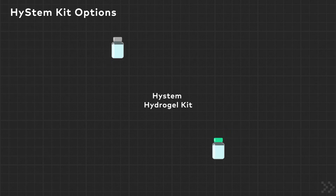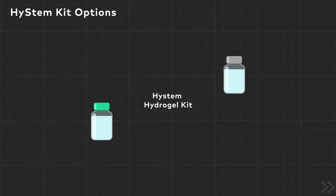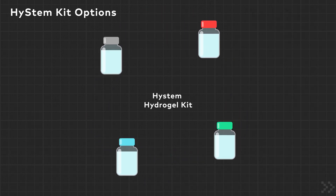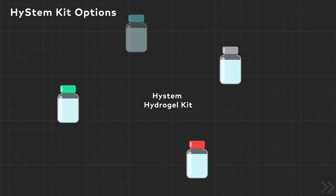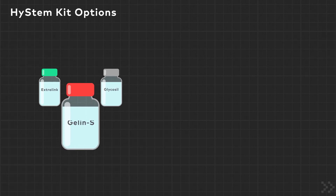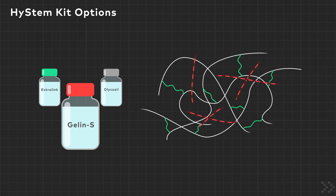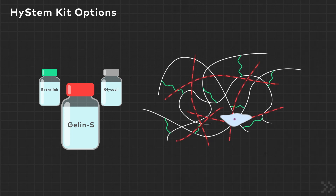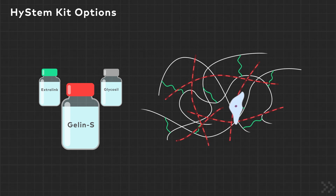There are several versions of the Hystem kit which contain additional ECM components to further customize hydrogels for specific applications. In addition to Glycosyl and Extralink, Hystem-C contains thiolated gelatin called Gelin-S. Because gelatin is denatured collagen, Hystem-C provides basic cell attachment sites for a wide variety of primary cells and mimics the proteins and structures found in vivo. This kit is recommended for adherent cell types and for cell culture optimization.